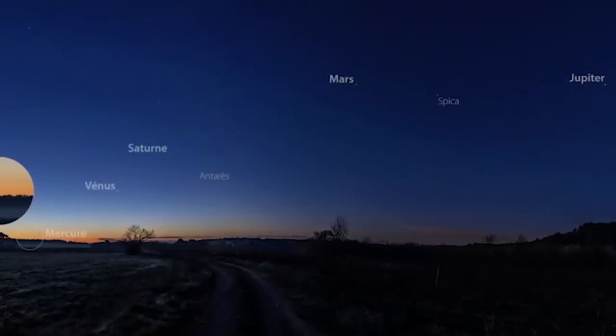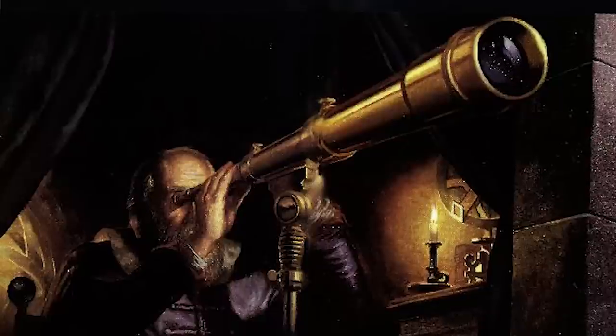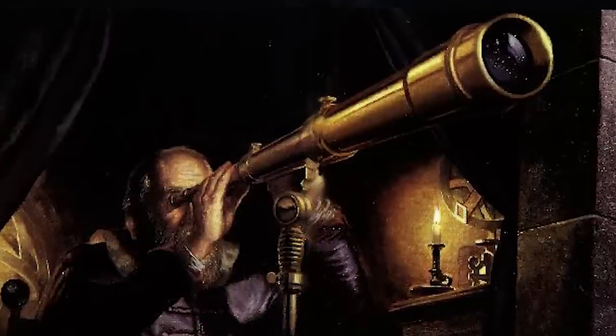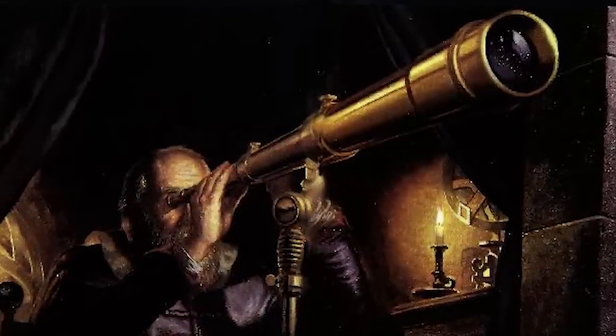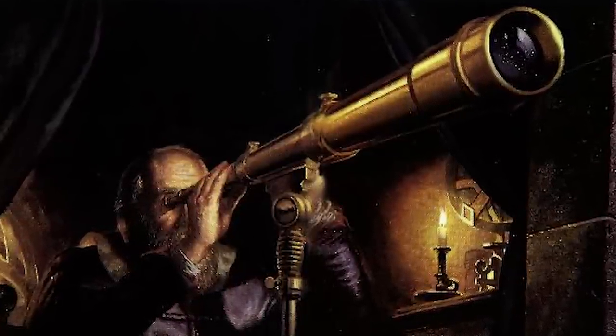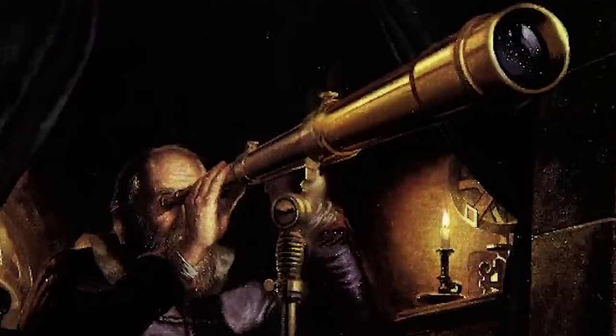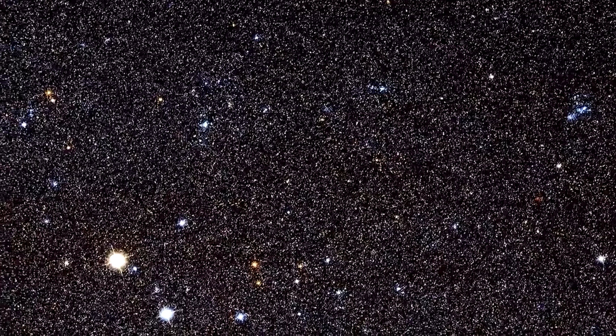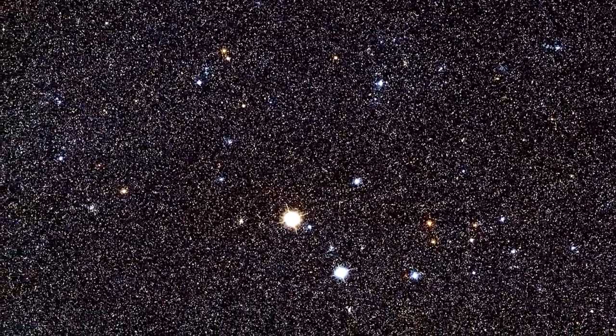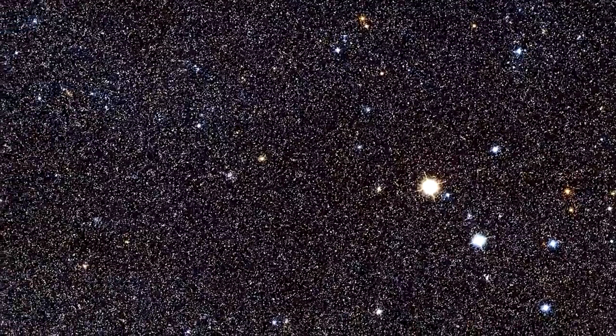From the 17th century, thanks to the telescope, astronomers could finally observe the solar system as such. Galileo was among the first to observe details of other objects, such as the craters of the Moon, through his telescope. These groundbreaking observations legitimize the idea of the heliocentric model advanced by Nicholas Copernicus.